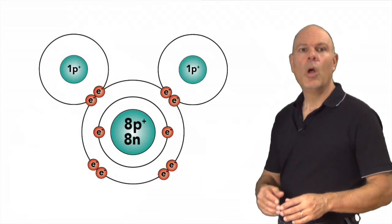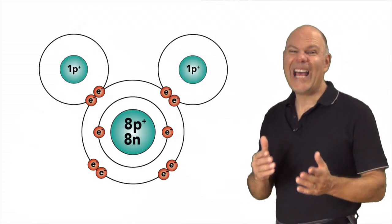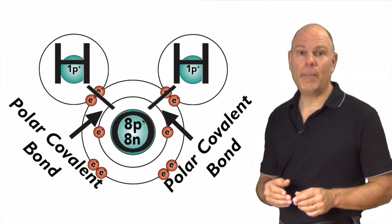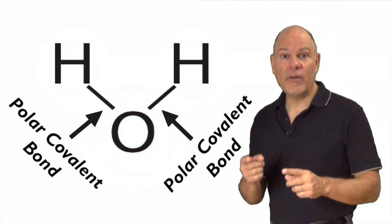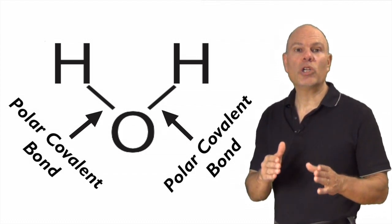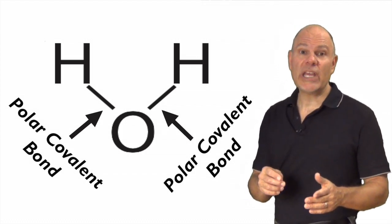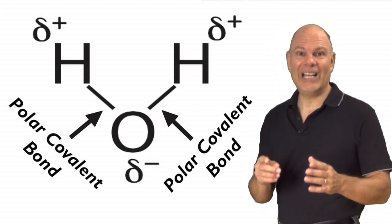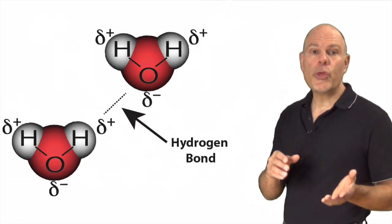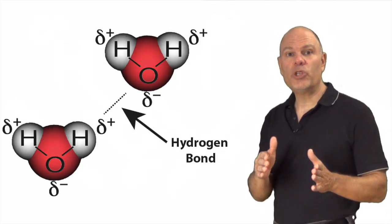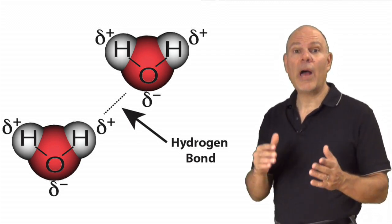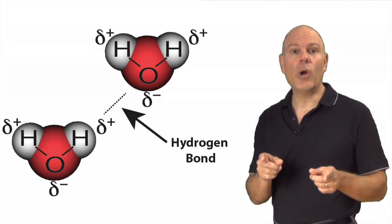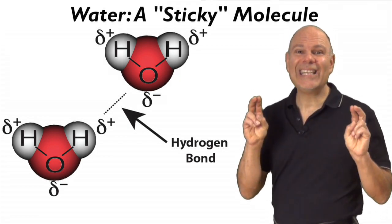So let's review. Water, first of all, is held together by polar covalent bonds. Second, the unequal electron sharing involved in these bonds gives water charged regions, represented by these delta positive and delta negative signs. Third, oppositely charged regions in water molecules will bind with each other to form hydrogen bonds. And fourth, that makes water a sticky molecule.